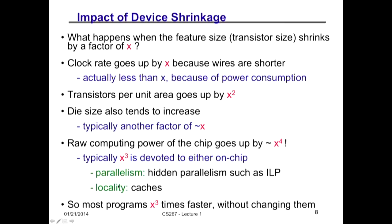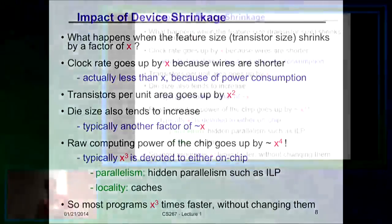The other improvement was locality. The most expensive thing on these computers is not doing multiplies or adds — it's getting the data from where it lives in memory, bringing it to the adder or multiplier. That can take orders of magnitude longer than actually doing the arithmetic. So they spent a lot of transistors building little memories on the chip — caches — so you didn't have to move the data as far. Most programs went twice as fast every 18 months without changing your sequential code. That was a very good business model.